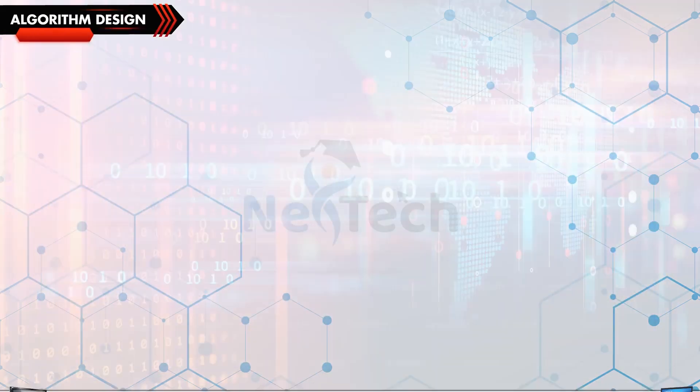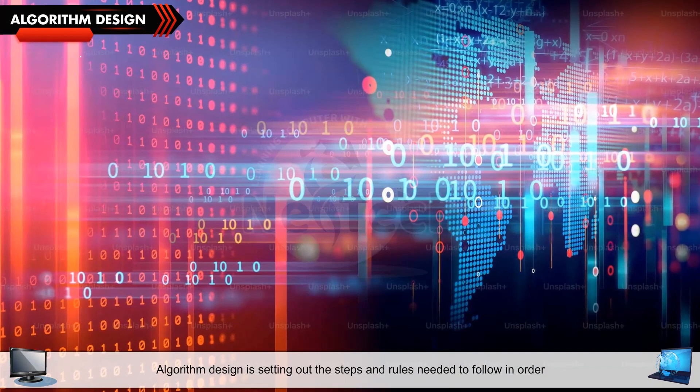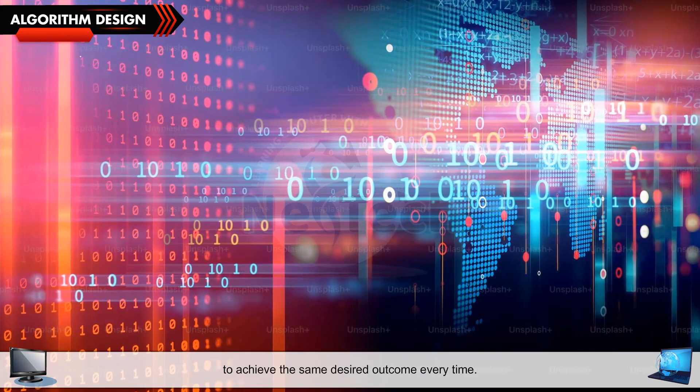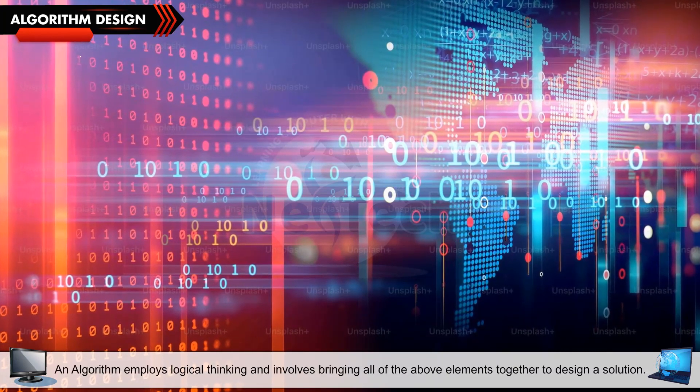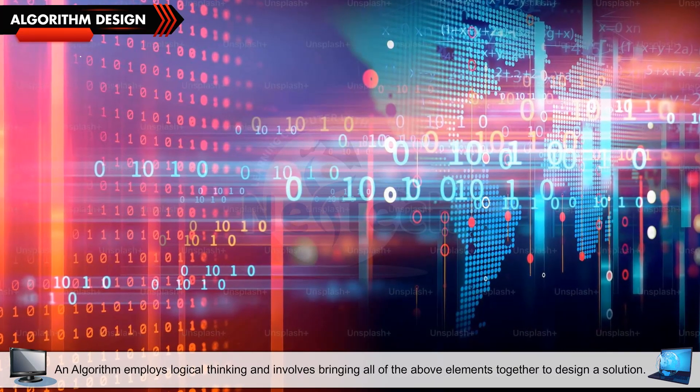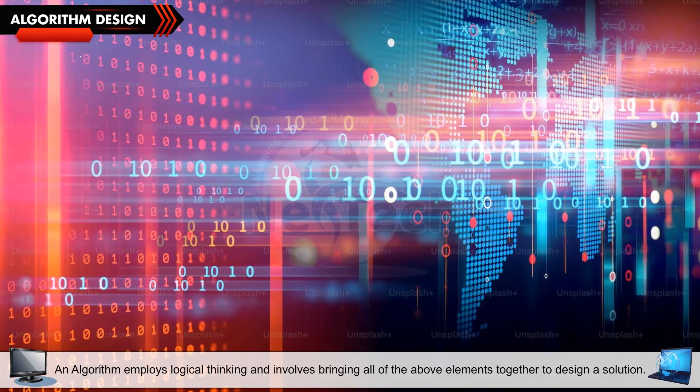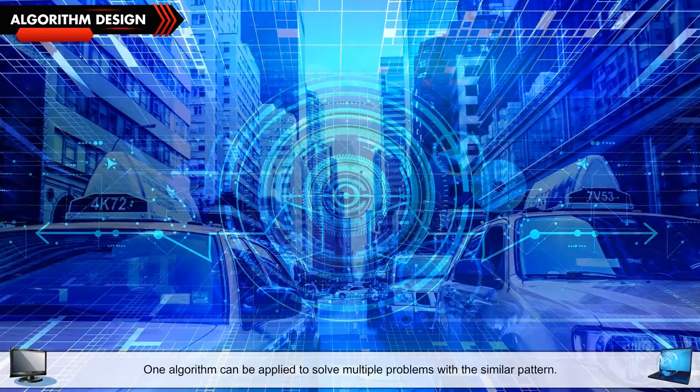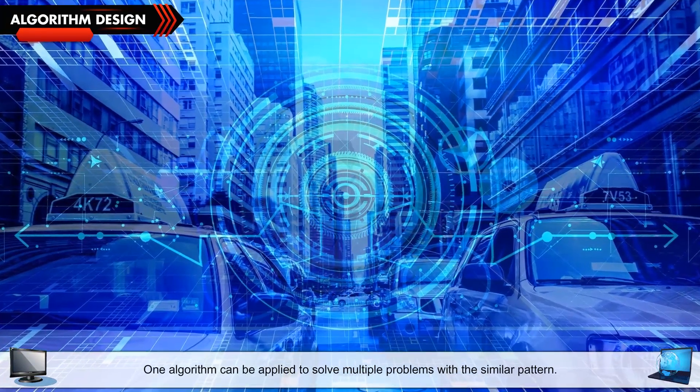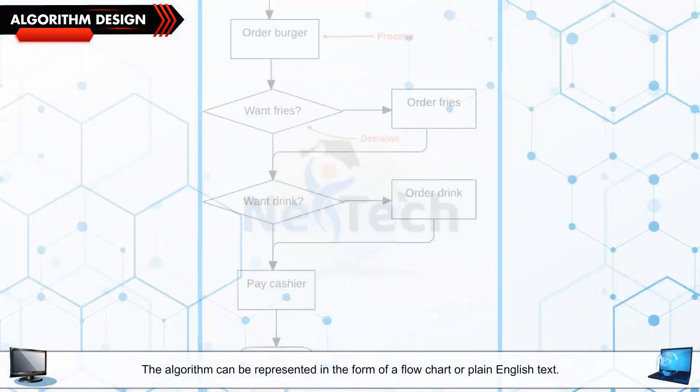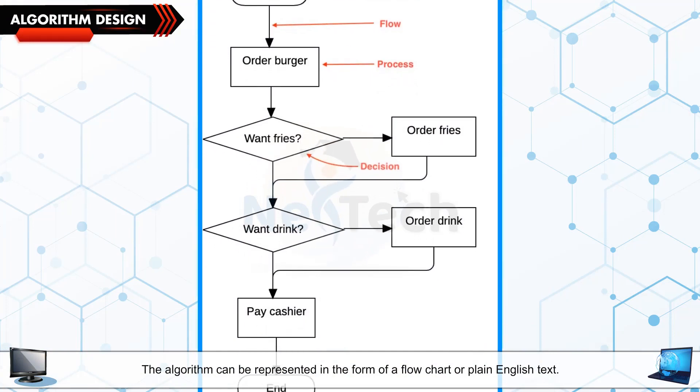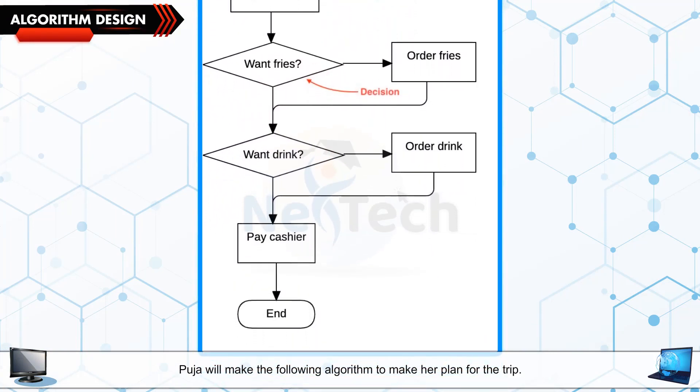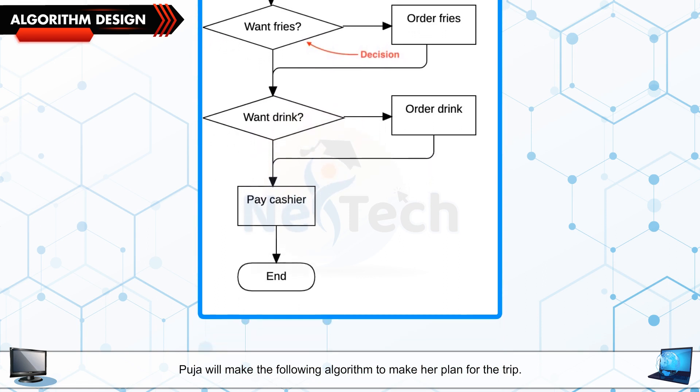Algorithm Design: Algorithm design is setting out the steps and rules needed to follow in order to achieve the same desired outcome every time. An algorithm employs logical thinking and involves bringing all of the previous elements together to design a solution. One algorithm can be applied to solve multiple problems with a similar pattern. The algorithm can be represented in the form of a flow chart or plain English text. Pooja will make the following algorithm to make her plan for the trip.